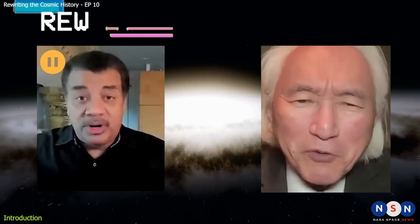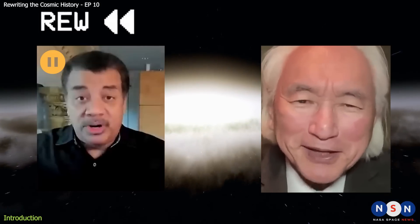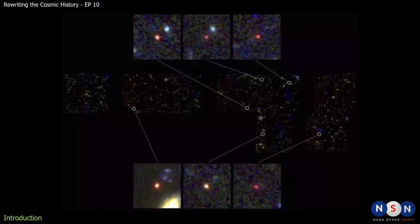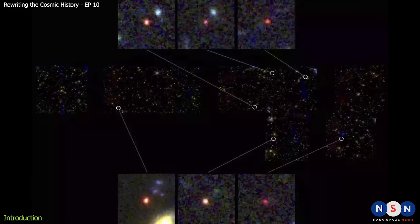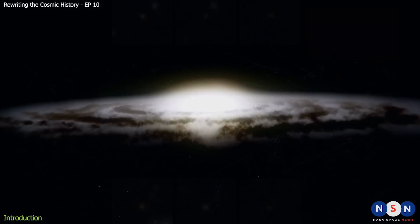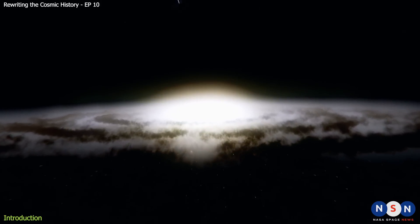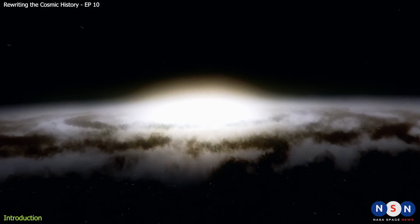Remember, these galaxies discovered by James Webb are some of the most distant and ancient galaxies ever seen by humans. They are so far away that their light has taken more than 13 billion years to reach us.